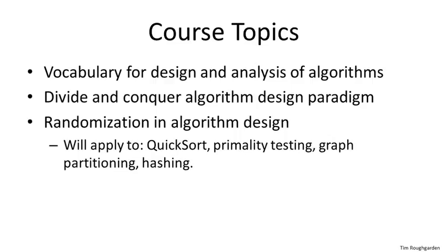A randomized algorithm is one that flips coins while it executes — it will have different executions if you run it over and over again on a fixed input. Allowing randomization internal to an algorithm often leads to simple, elegant, and practical solutions to various computational problems. The canonical example is randomized quicksort, and that algorithm's analysis we will cover in detail in a few lectures.